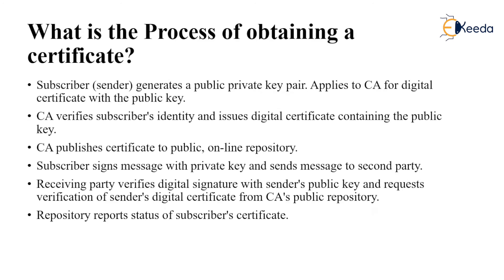What is the process of obtaining a certificate? A subscriber or sender generates a public key and private key pair. They then apply to the certificate authority for a digital certificate with the public key — the digital certificate authenticates the public/private key pair of a particular user. The CA verifies the subscriber's identity and issues a digital certificate containing the public key, then publishes the certificate to public online repositories.